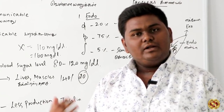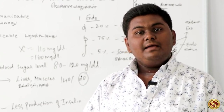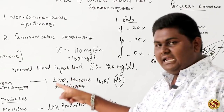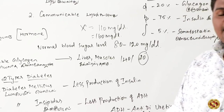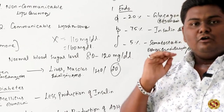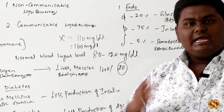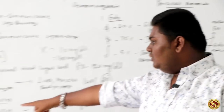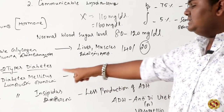If hypoglycemia occurs, you get too tired. Hypoglycemia means less blood sugar, while hyperglycemia means too much blood sugar. There are two types of diabetes: diabetes mellitus and diabetes insipidus. Diabetes mellitus is caused by less production of insulin. Less production of insulin causes diabetes mellitus, which is why insulin treatment is used.